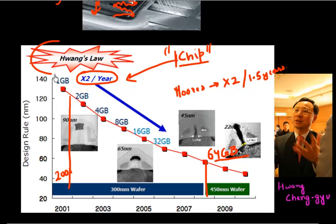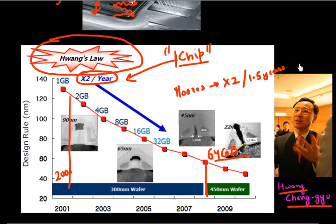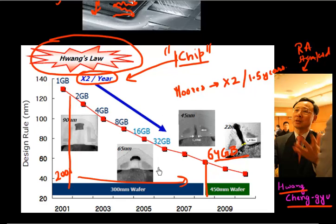This is also known as Huang's Law, named after Mr. Huang, who was the president of Samsung's microelectronics division and also used to be a research associate at Stanford back in the 80s. He gave the prediction that the amount of storage available in a flash memory chip will double every year, and that has held true for the larger part of the last decade.